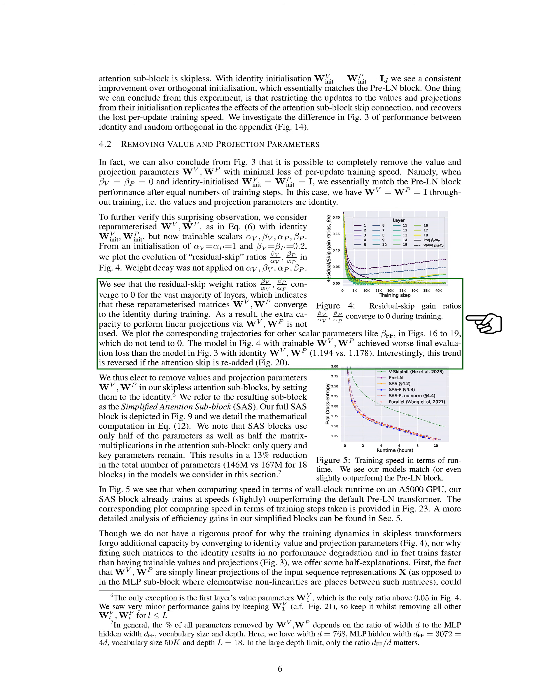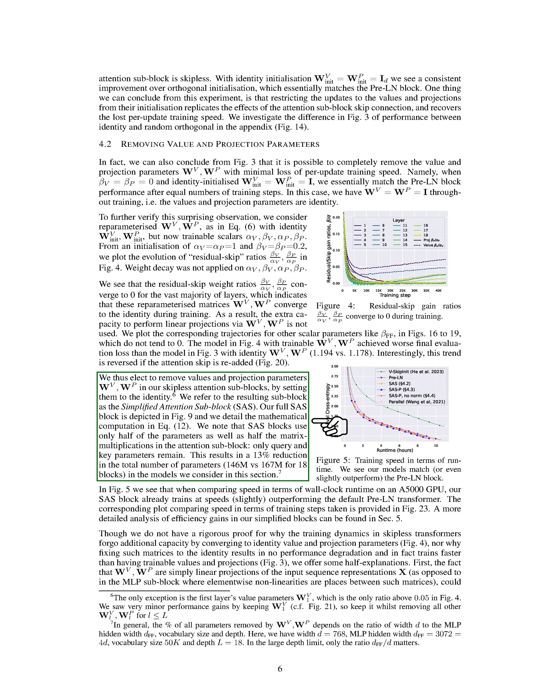This implies that the extra capacity to perform linear projections using W-hat-V and W-hat-P is not utilized. Interestingly, the model with trainable W-hat-V and W-hat-P performed worse in terms of final evaluation loss than the model with these matrices set to the identity matrix. As a result, we decided to remove the value and projection parameters in our skipless attention sub-blocks by setting them to the identity matrix. The only exception was the first layer's value parameters W-hat-V_1. We refer to the resulting sub-block as the Simplified Attention Sub-block, SAS, which uses only half of the parameters and half the matrix multiplications in the attention sub-block, with only query and key parameters remaining.